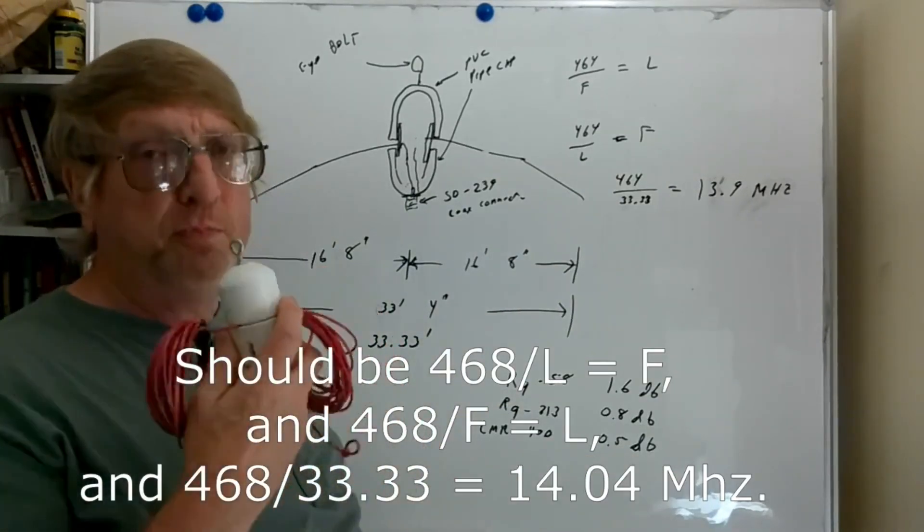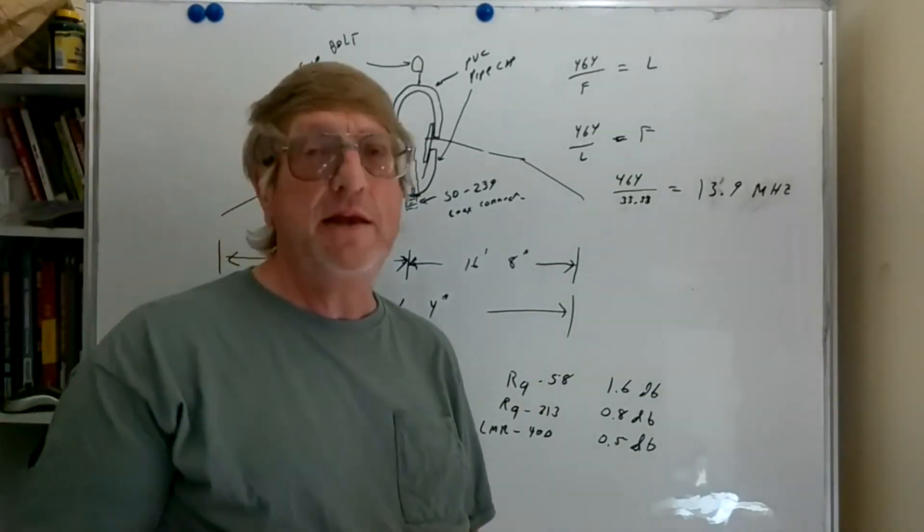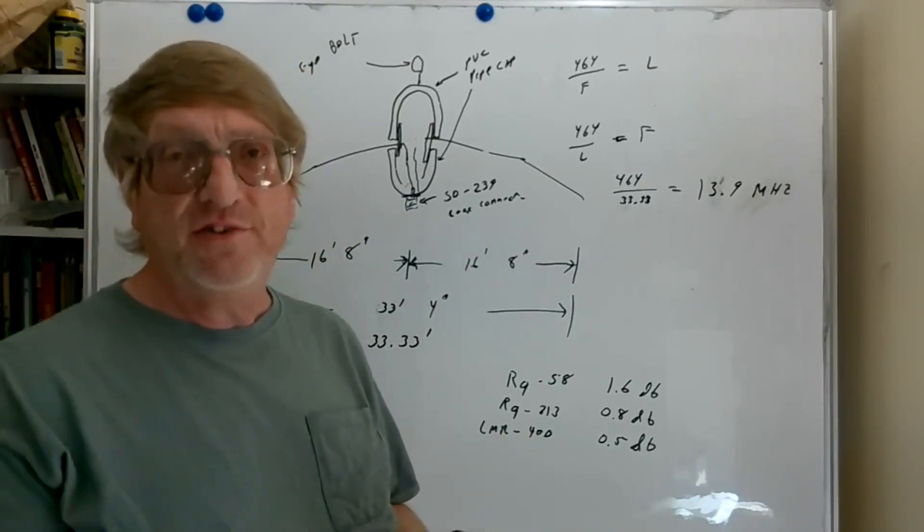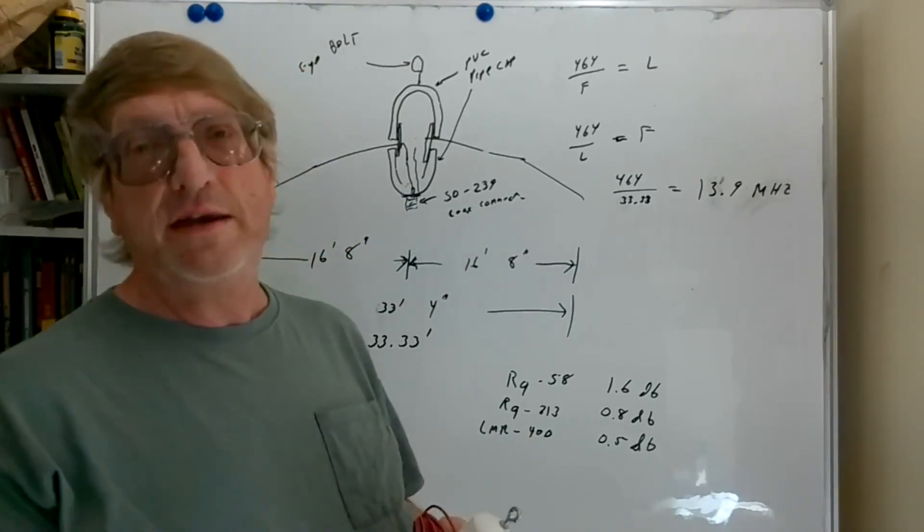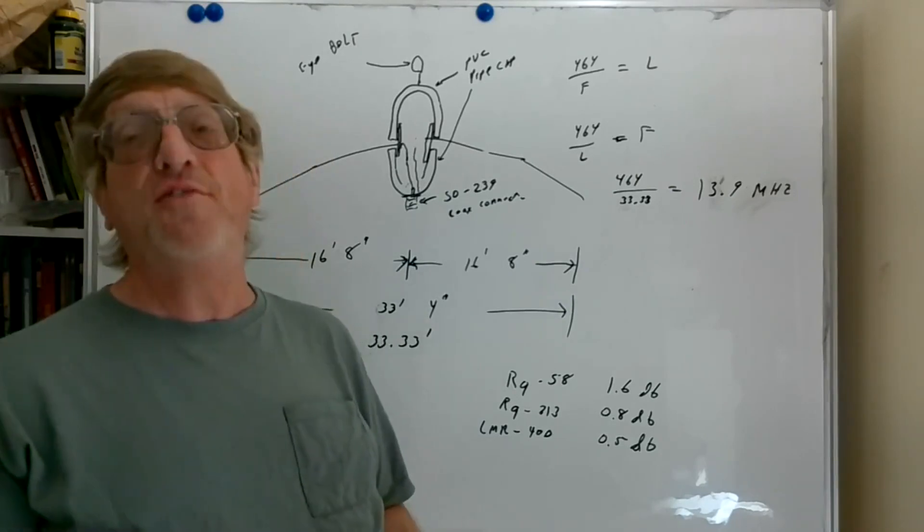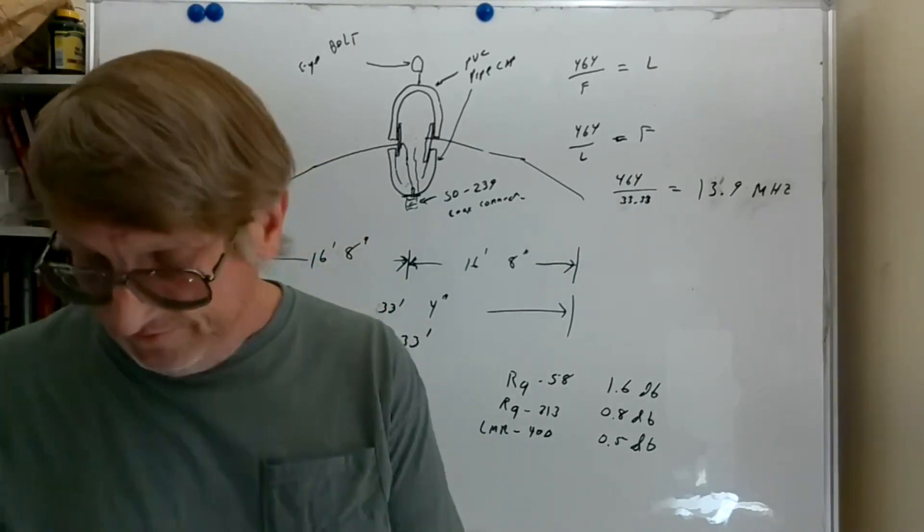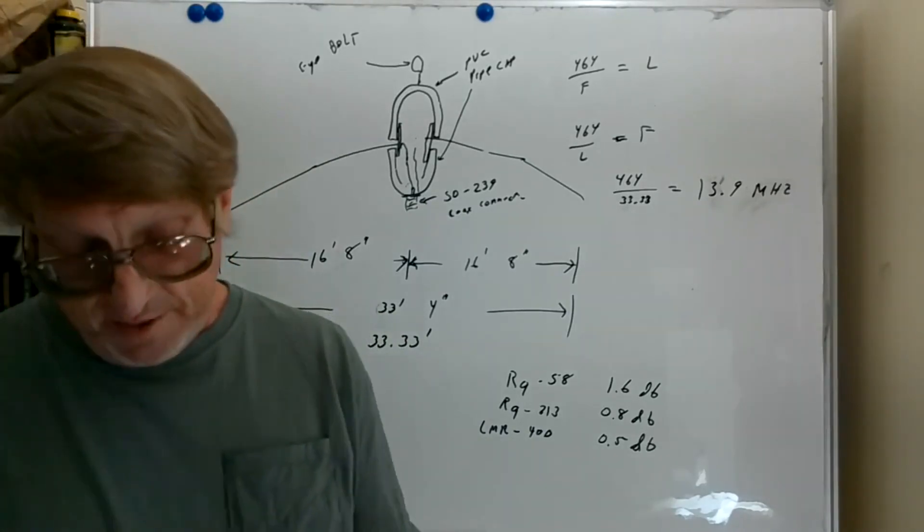For this particular dipole, which I'm going to install as an inverted V, about 13.9 megahertz, which is just below the 20 meter band. The 20 meter amateur band in the US goes from 14 megahertz to 14.350 megahertz.